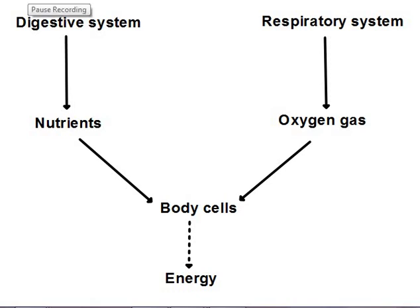Bismillah ar-Rahman ar-Rahim. Assalamu alaikum warahmatullahi wabarakatuh. Today we're going to start a new chapter, but before we start, let us review some of the previous concepts. Until now we have learned about the digestive system and the respiratory system. We learned that the aim of the digestive system is to provide the body with nutrients, while the aim of the respiratory system is to provide the body with oxygen gas and rid it from carbon dioxide.